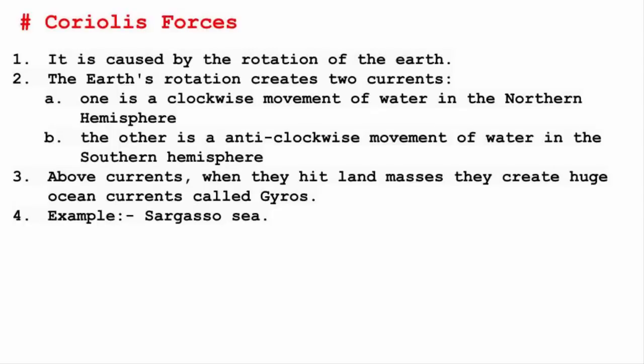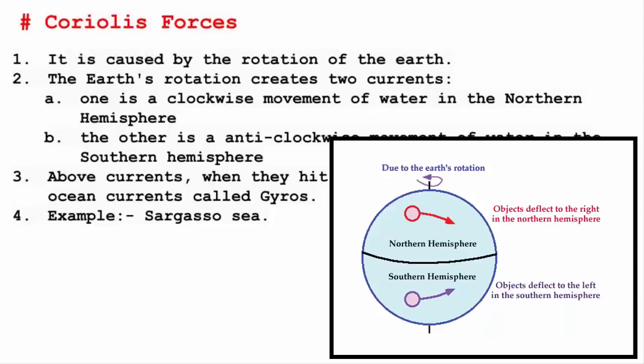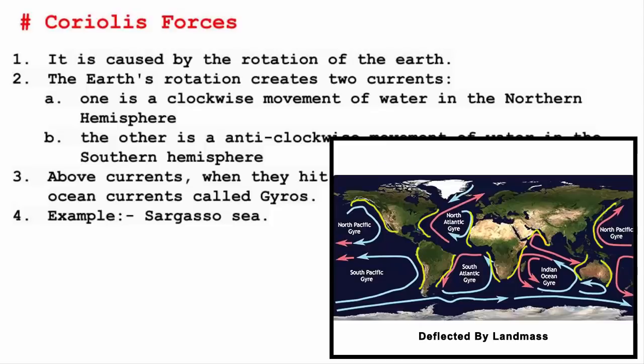The fourth factor is Coriolis force. This is caused by the rotation of Earth. When a rotating object collides with another moving or stationary force, it creates a new motion. The Earth's rotation creates two currents: one is a clockwise movement of water in the northern hemisphere, and the other is an anti-clockwise movement of water in the southern hemisphere.